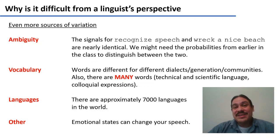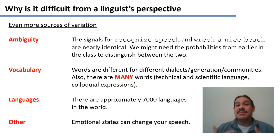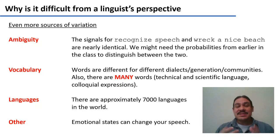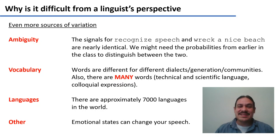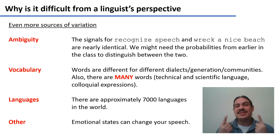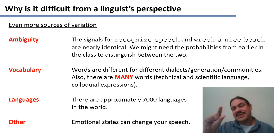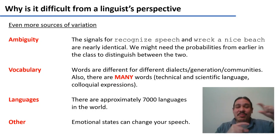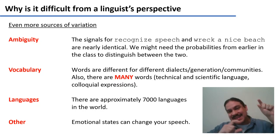Signals and words in every language can be ambiguous. Sound signals can be ambiguous too — remember Laurel and Yanni: slight differences in listeners' age can make the same sound sound different. Similarly, signals for 'recognized speech' and 'wreck a nice beach' are very similar, so we need contextual information to interpret them. We need to calculate probabilities — like we did with n-grams in week four — so that the probability of 'recognized speech' is preferred over 'wreck a nice beach'.